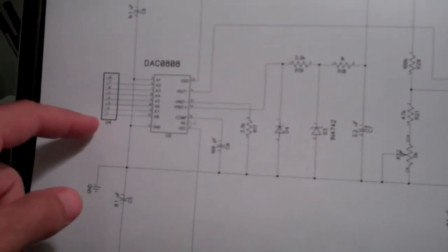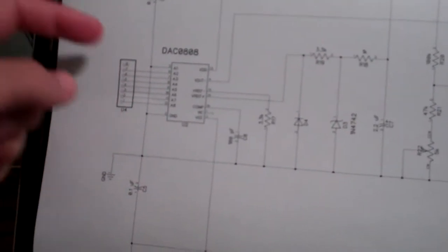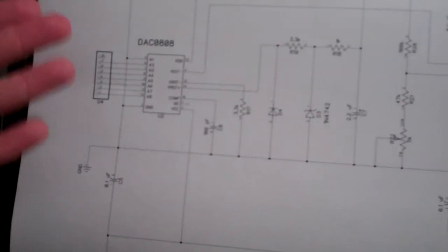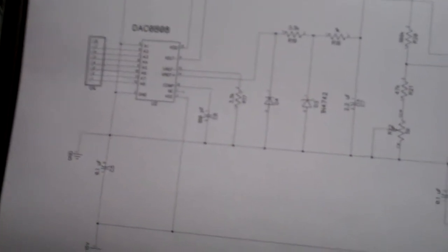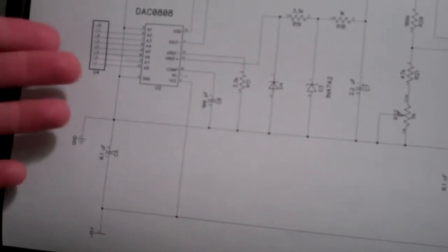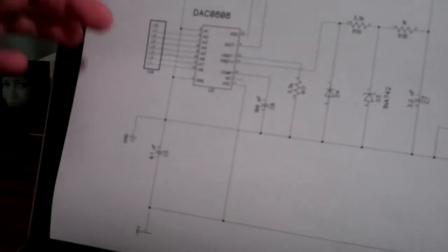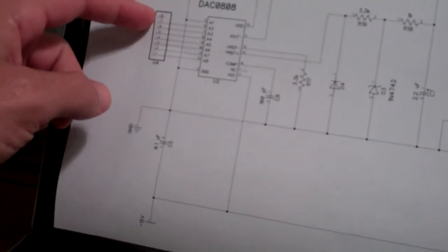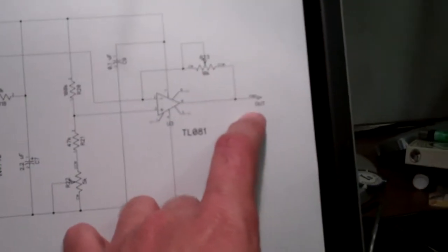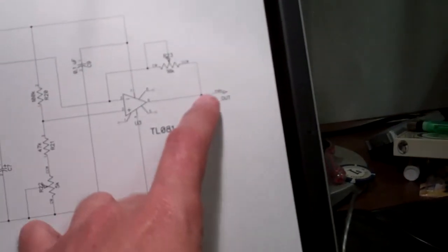Let's say, for example, we want to have zero and then we'll have as our highest number decimal 120. Whatever that is in hexadecimal, I don't know. 120 will be our input. In terms of voltage, what we want is zero volts and 10 volts at the top.